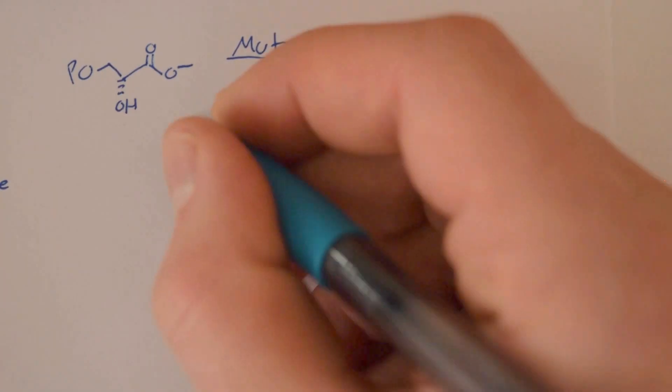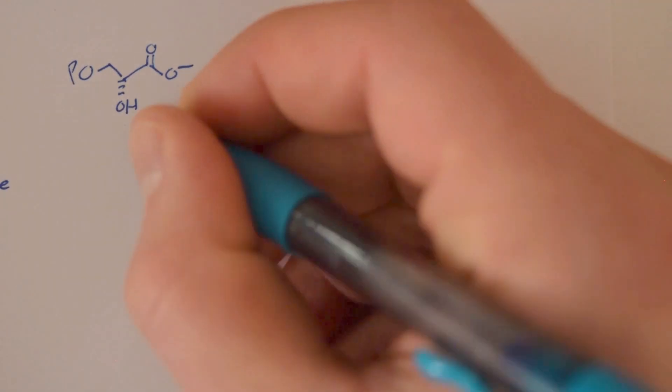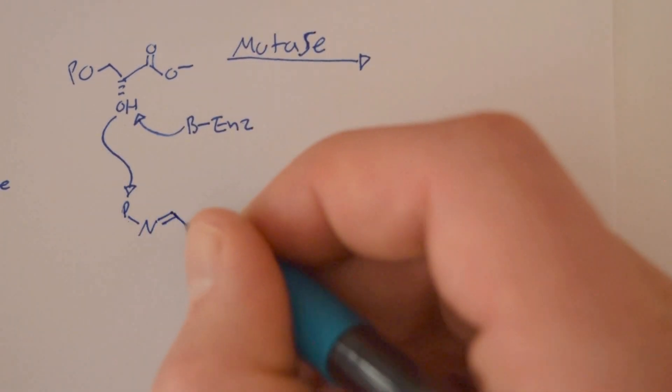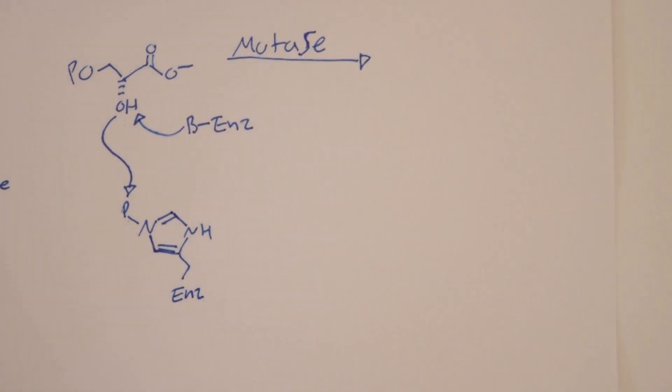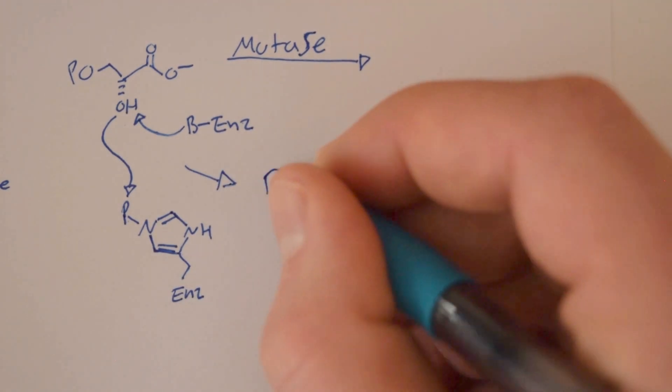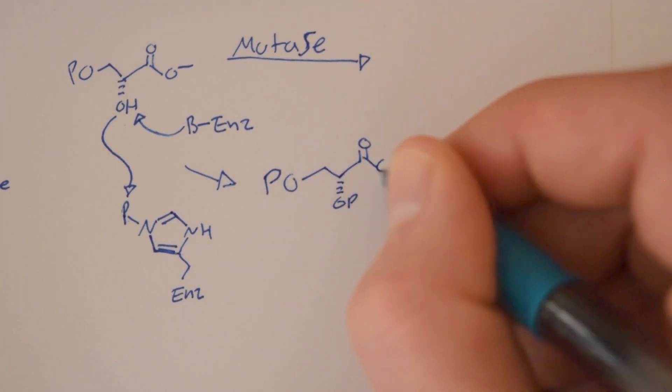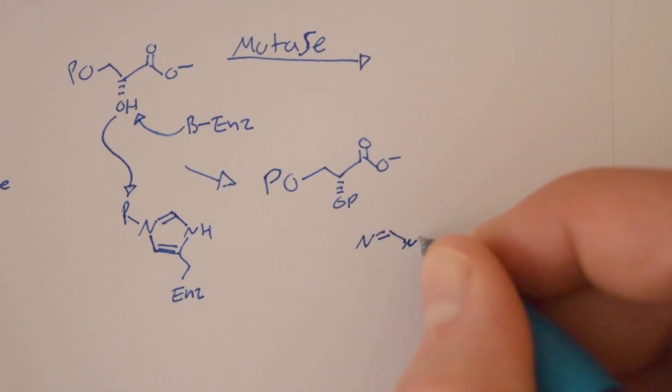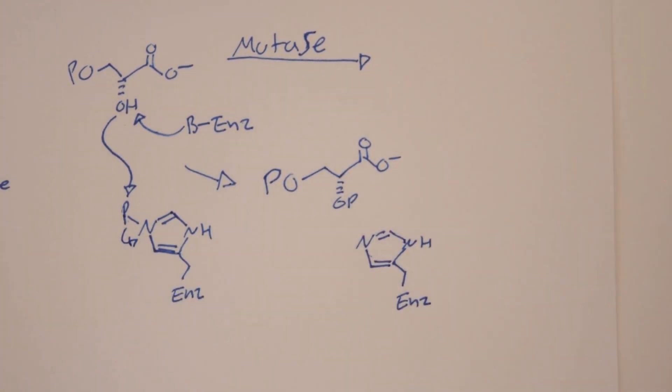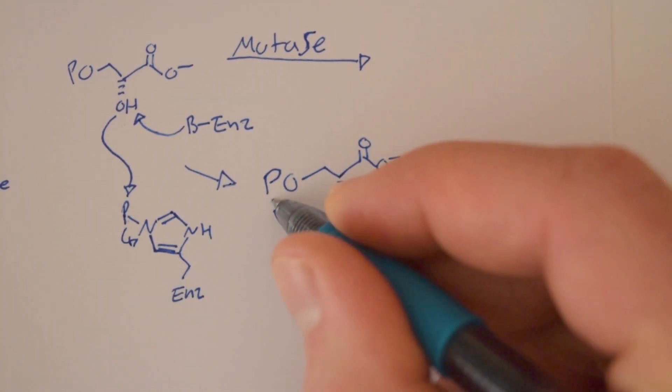Next, the enzyme mutase replaces the phosphate group on the third carbon and puts one onto the 2-carbon, giving us 2-phosphoglycerate.